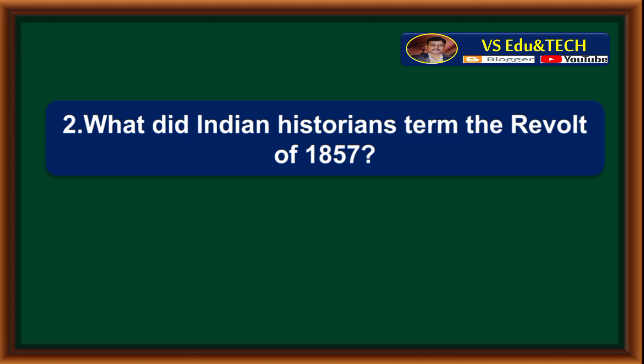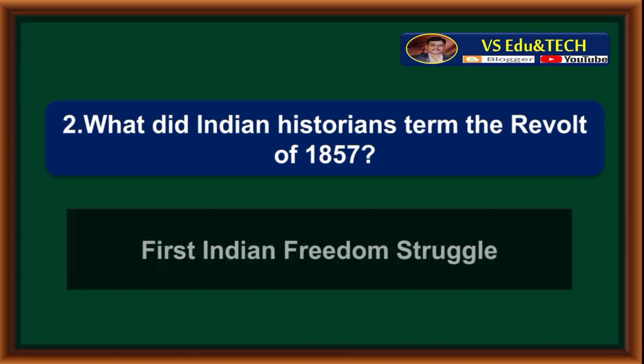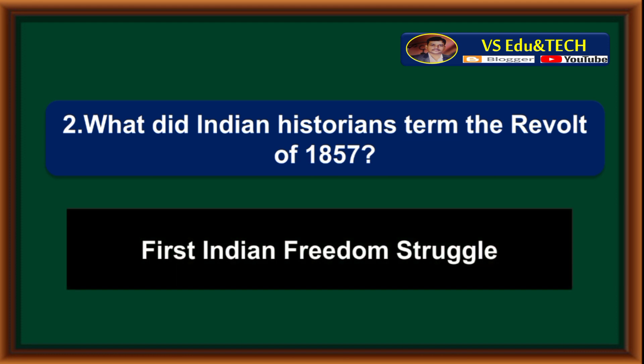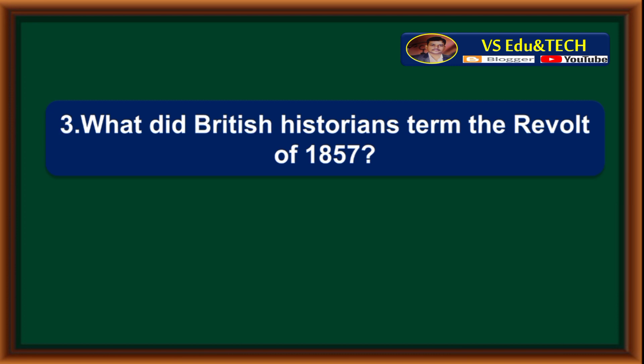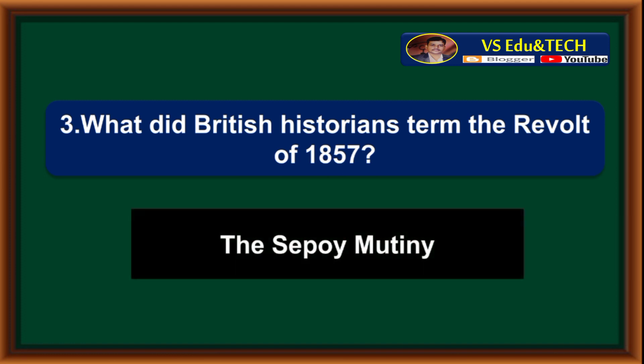Question 9: What did Indian historians term the revolt of 1857? Answer: First Indian Freedom Struggle. Question 10: What did British historians term the revolt of 1857? Answer: The Sepoy Mutiny.